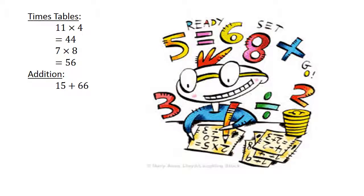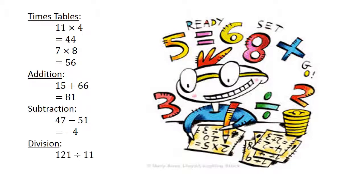Addition: 15 plus 66 equals 81. Subtraction: 47 minus 51 equals negative 4. Division: 121 divided by 11 equals 11.